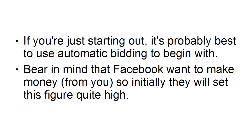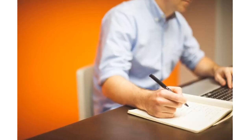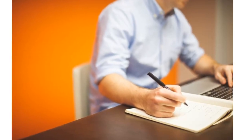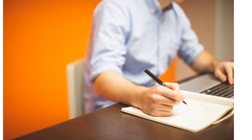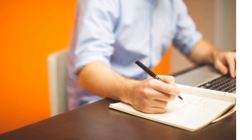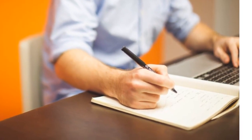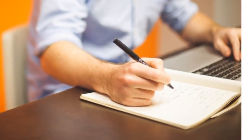Bear in mind that Facebook wants to make money from you, so initially they're going to set this figure quite high. But because you may not know exactly what is a good bid versus a bad bid, you're probably going to have to go along with it just to begin with. The best strategy is to keep it at automatic for a couple of days and see how well your ad performs — how often it's being shown, how many clicks you're getting, etc. Then cut the CPC down and see how often your ad shows.